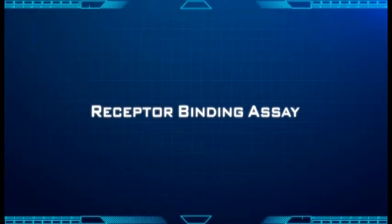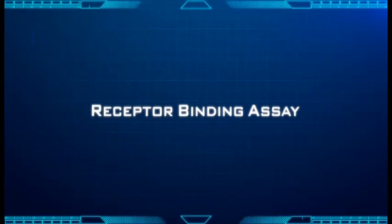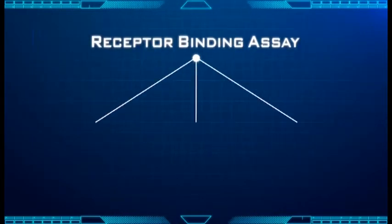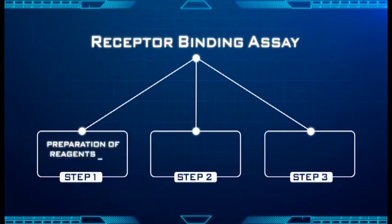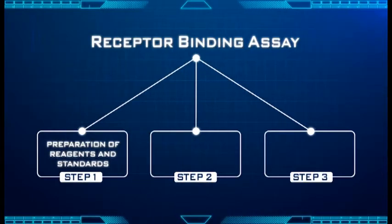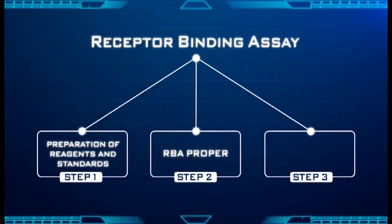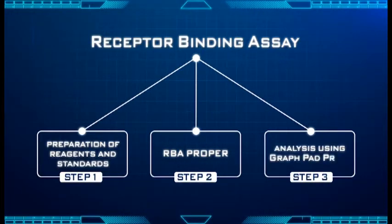The Receptor Binding Assay, or RBA, is divided into three major steps. First is the preparation of reagents and standards. Second is the RBA proper. And the last step is the analysis using GraphPad Prism.